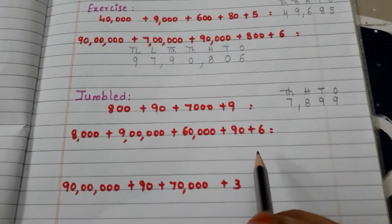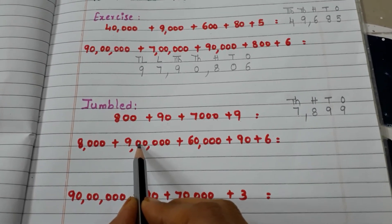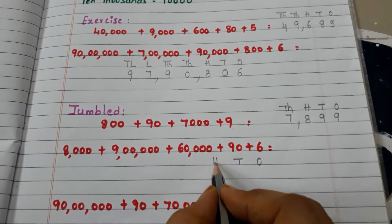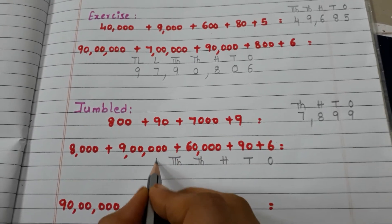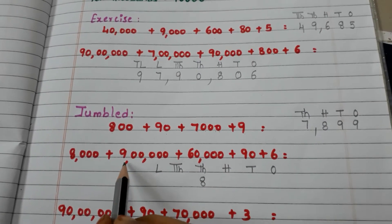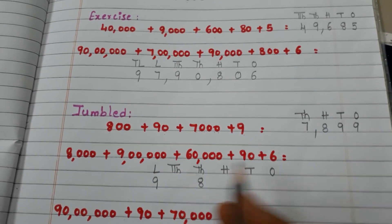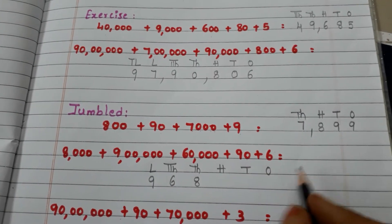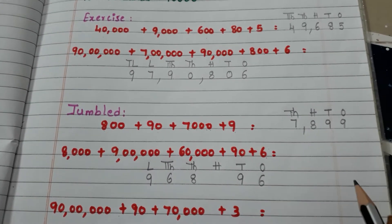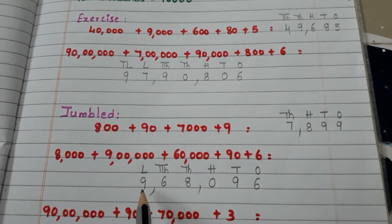Let us go to another example. Check for the highest number of zeros — one, two, three, four, five — five zeros means we have the number till lakhs. Write the places: ones, tens, hundreds, thousands, ten thousands, lakhs. 8 thousands — in the thousands place write 8. 9 lakhs — in the lakhs place write 9. 60,000 — in the ten thousands place write 6. 90 — in the tens place write 9. 6 ones — in the ones place write 6. For hundreds place write 0. The number is 9,68,096.